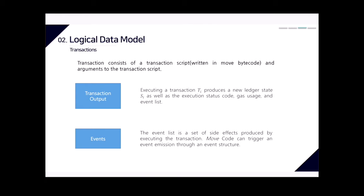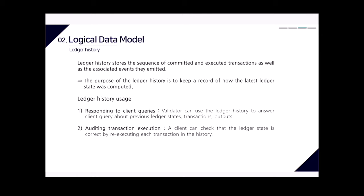A transaction consists of a transaction script written in Move bytecode and arguments to the transaction script. After transaction execution, it generates two outputs: transaction output and events. Executing a transaction produces a new ledger state SI, as well as an execution status code, gas usage, and an event list. The event list is the set of side effects produced by executing the transaction, and Move code can trigger event emission through the event structure.